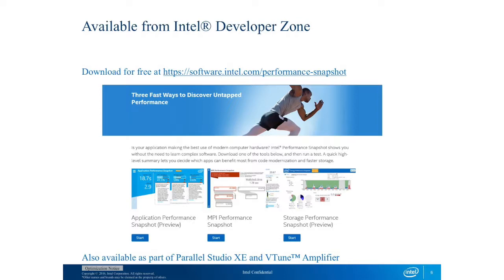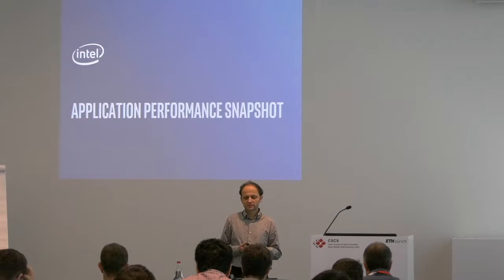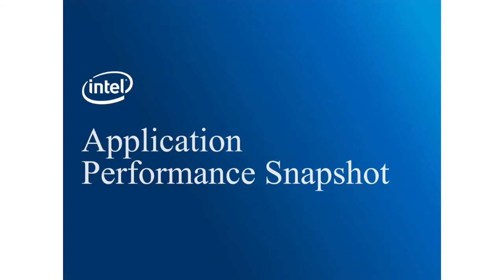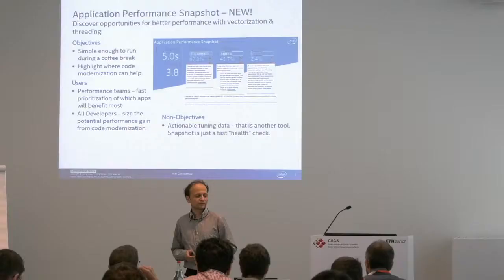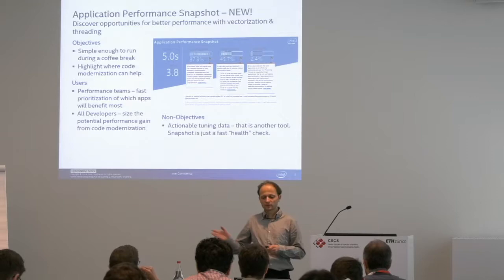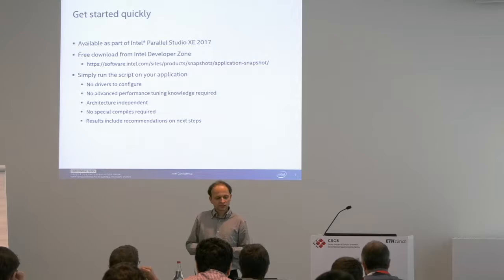In the application performance snapshot, you can download it separately — you can see the URL on top of the slide. The performance snapshot gives you the intranode utilization: you get some percentages of utilization for the CPU part, for the sequential code, for floating-point performance, and for the memory boundness of the application. You can also get some further advice on how to go further, and the output looks like the blue thing you can see on the slide.